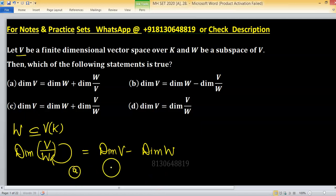Now come to option A. It says dimension of W over V. This is wrong because it may not be well-defined. If W is the vector space itself, or W equals V, then this doesn't make sense.